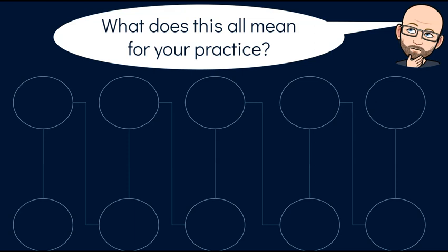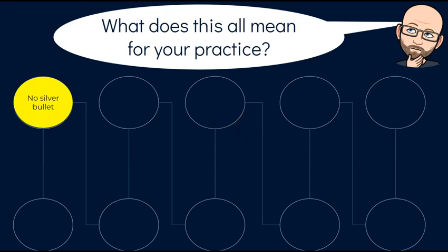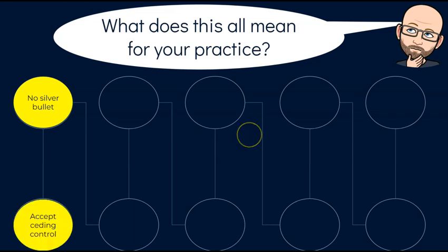So what does all this mean for your practice? How then do you proceed if all of this is true? The first and most challenging thing is that there's no silver bullet. Even before this there was no silver bullet to solving all of the things we have to navigate in the classroom, and nothing is going to save us from AI — it's here and we have to navigate it. There's no holding out and thinking something different is going to happen. There's also an important piece here of accepting the ceding of control.